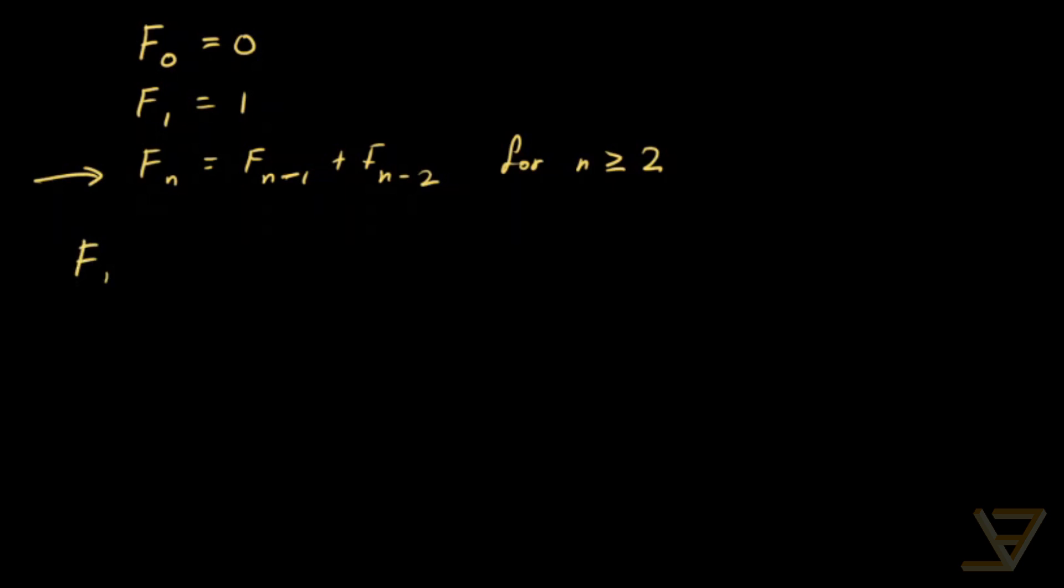So it looks like this, the sequence: Fn equals 0, 1, 1, 2, 3, 5, 8, 13, 21, and so on.